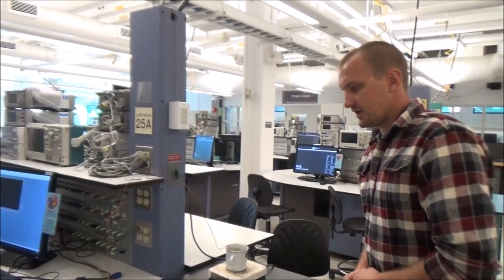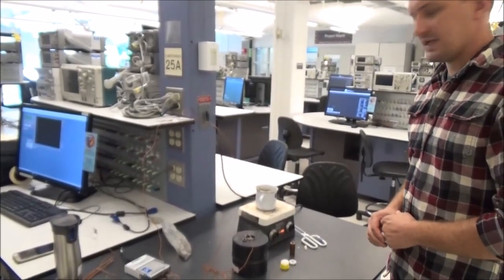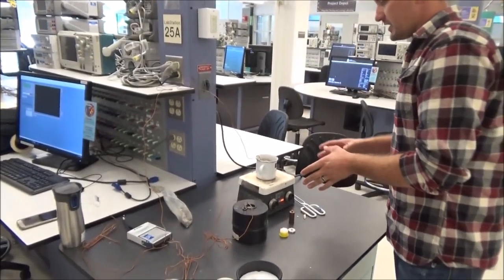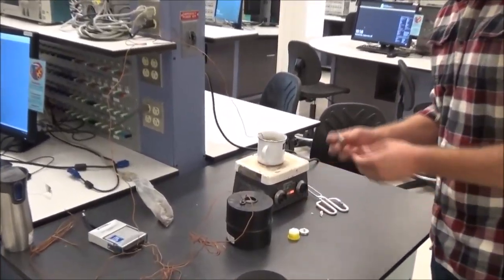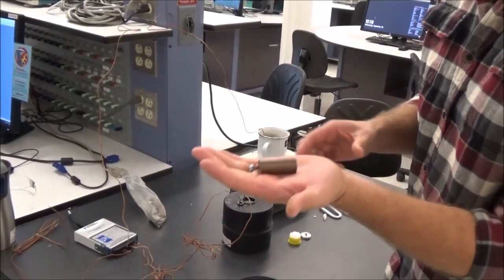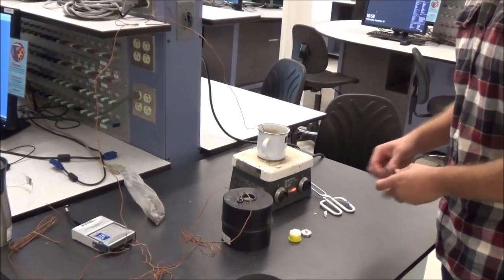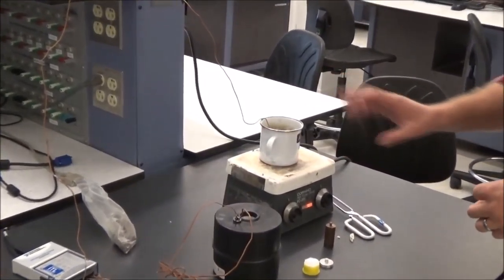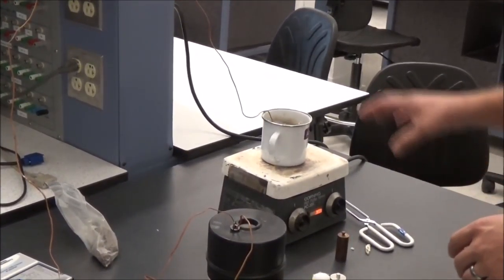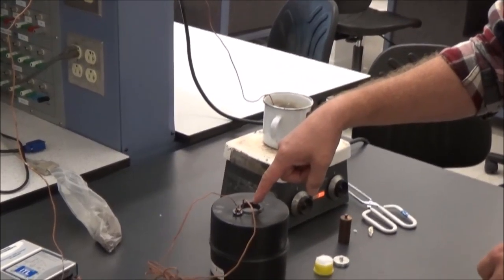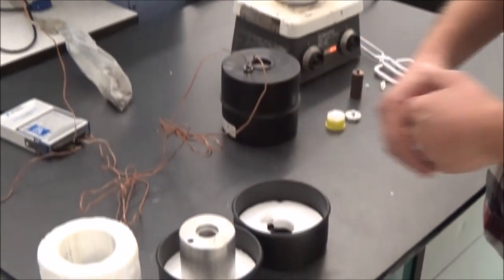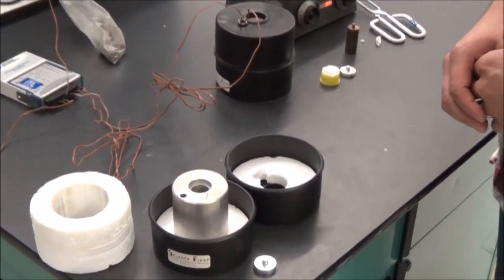All right, so here's a look at the calorimeter experiment that you'll be getting data to analyze. We have a sample. This is the sample that we're boiling right now. We placed the sample in the boiling water several minutes ago, so it's been boiling. It's at the same temperature as the boiling water. We'll place the sample into the calorimeter. We have another calorimeter here, which I can go over in more detail in a minute.